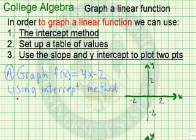The intercept method means let's let x equal 0. If x is 0, then we have f of x is 4 times 0 minus 2, which is negative 2. So that means we have the point 0, negative 2.